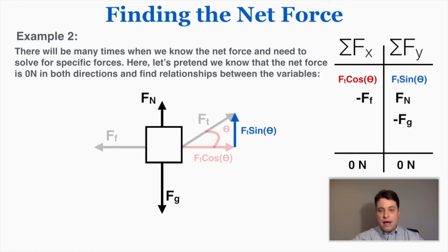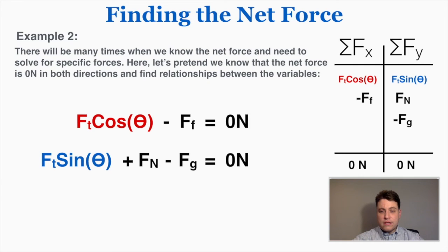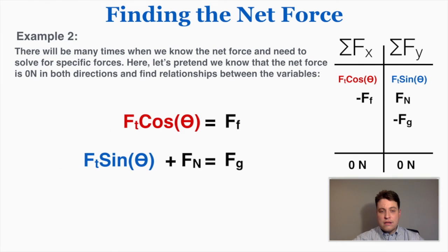When I rewrite that table I can see that FT times cosine of theta minus force of friction is equal to zero, and FT sine theta plus the normal force minus the force of gravity is equal to zero. If I rearrange these a little I get some identities. I can see that the force of tension times cosine of the angle is equal to the force of friction, so that's an interesting result. That's a way I can solve for one of these missing variables. And the force of tension times sine plus the normal force is equal to the force of gravity. Again an interesting result, I could use that to solve for some of the variables that I have here.